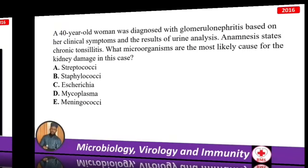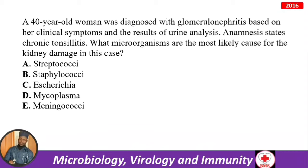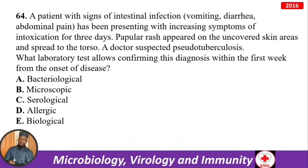A 40-year-old woman diagnosed with glomerulonephritis, anamnesis showing chronic tonsillitis — the causative microorganism is Streptococcus (Group A Streptococcus).